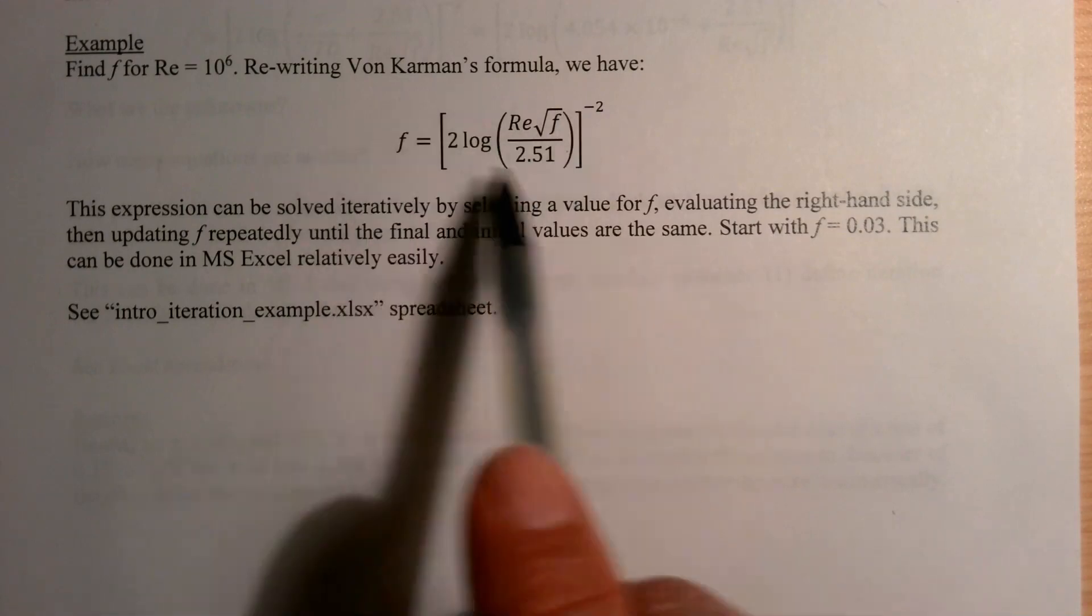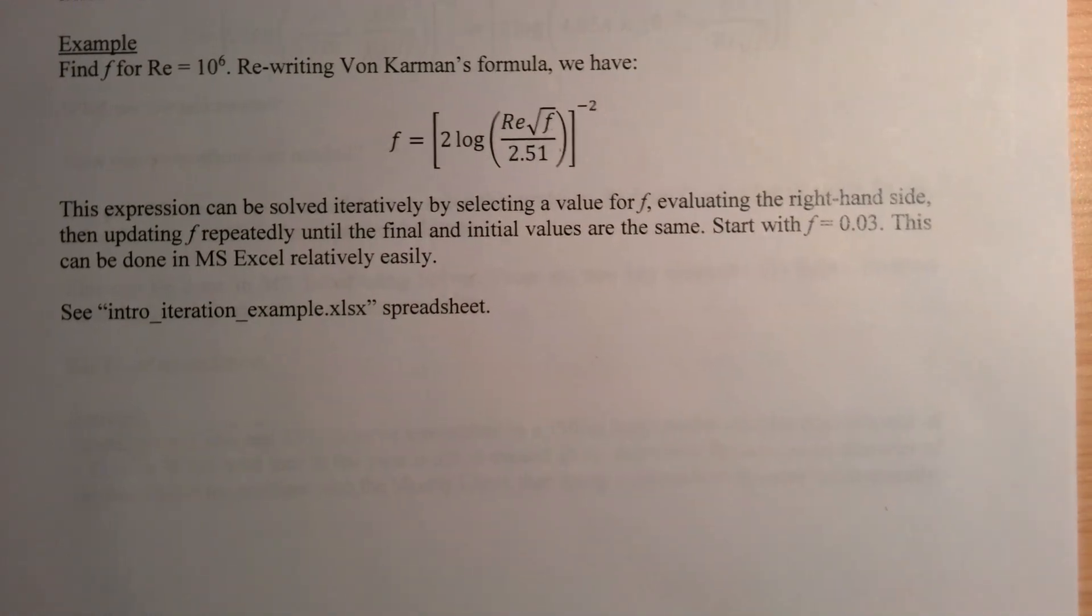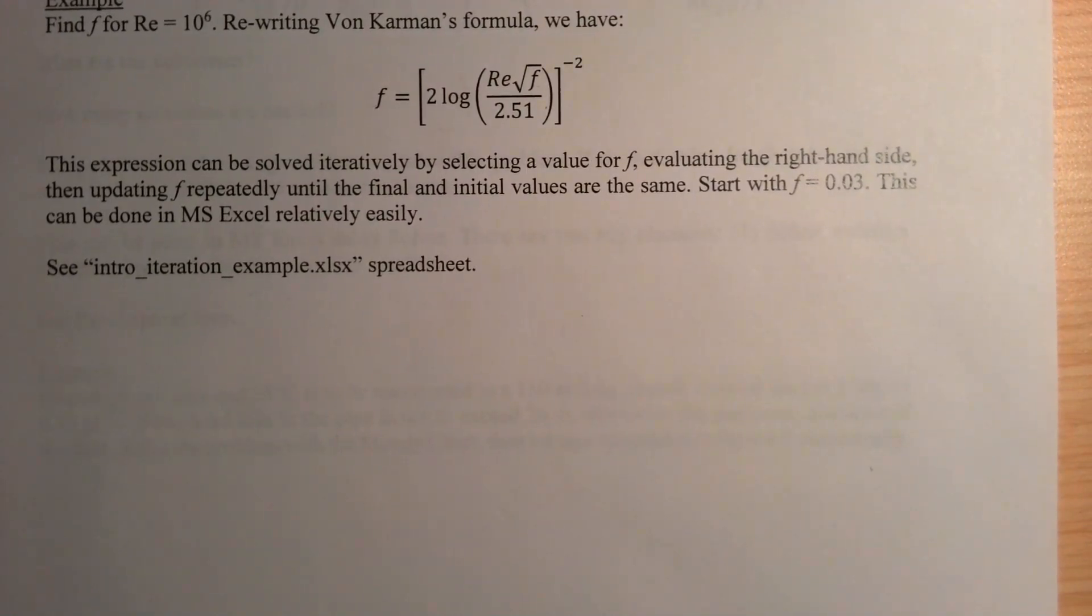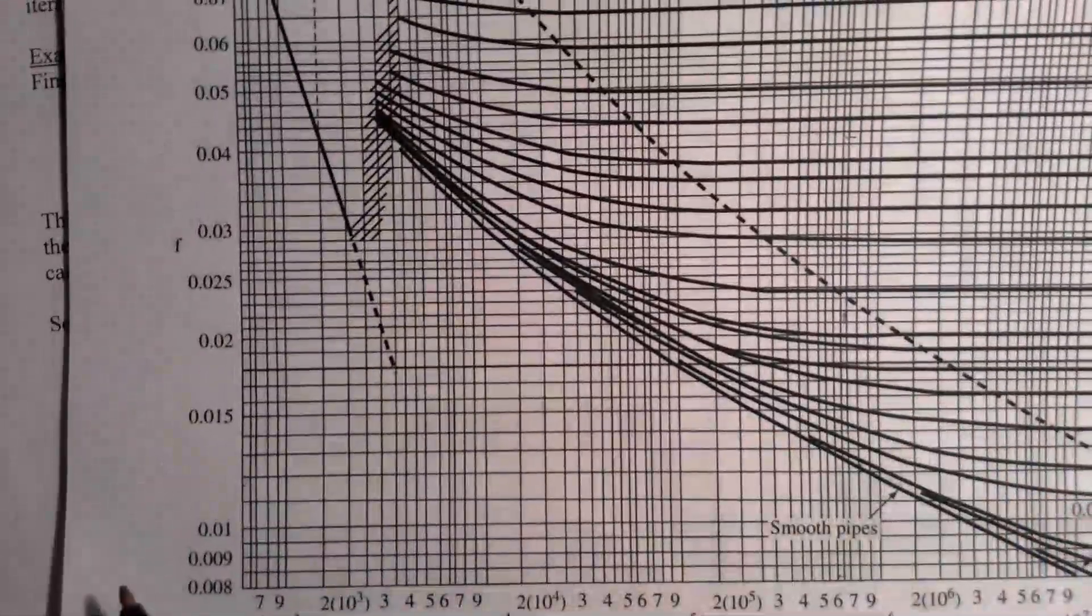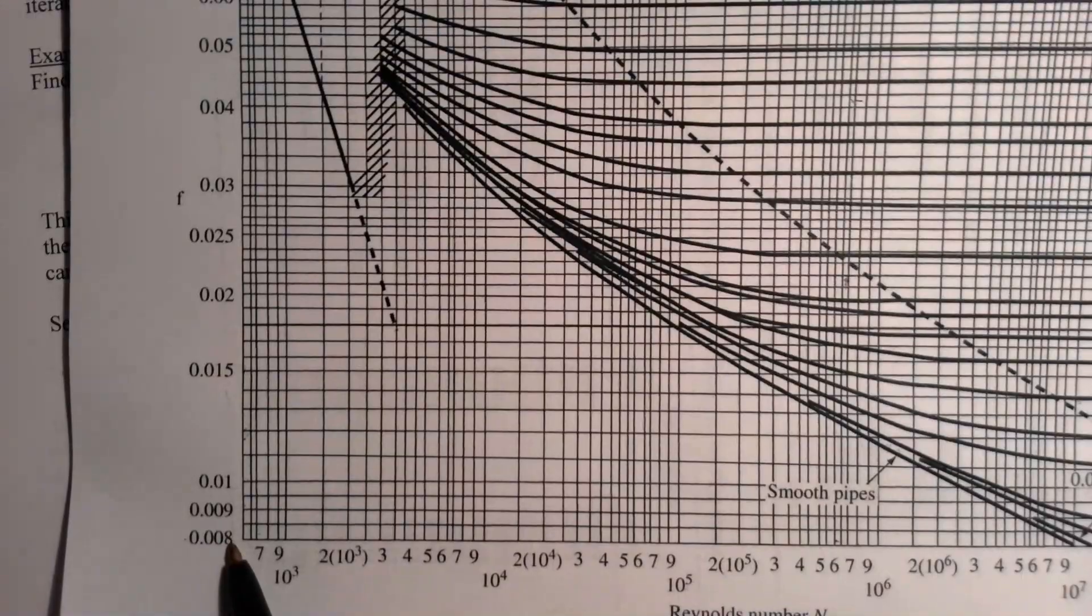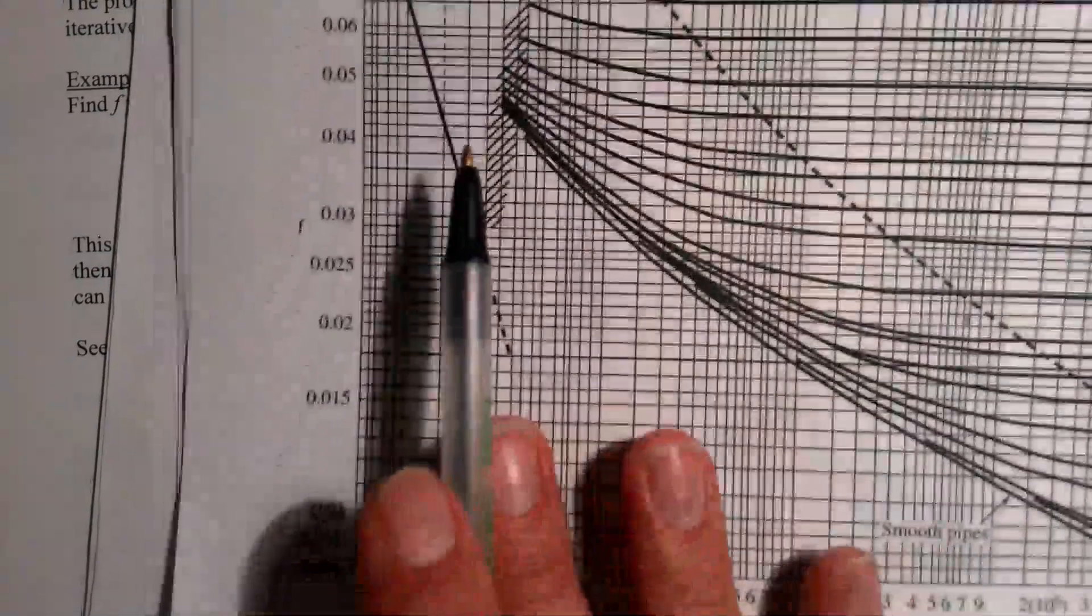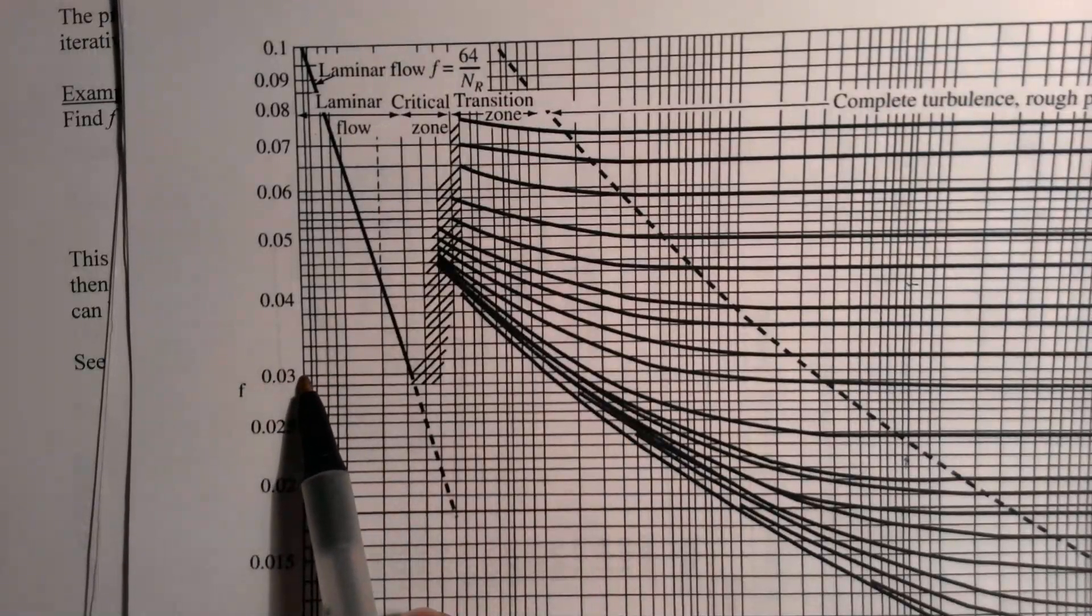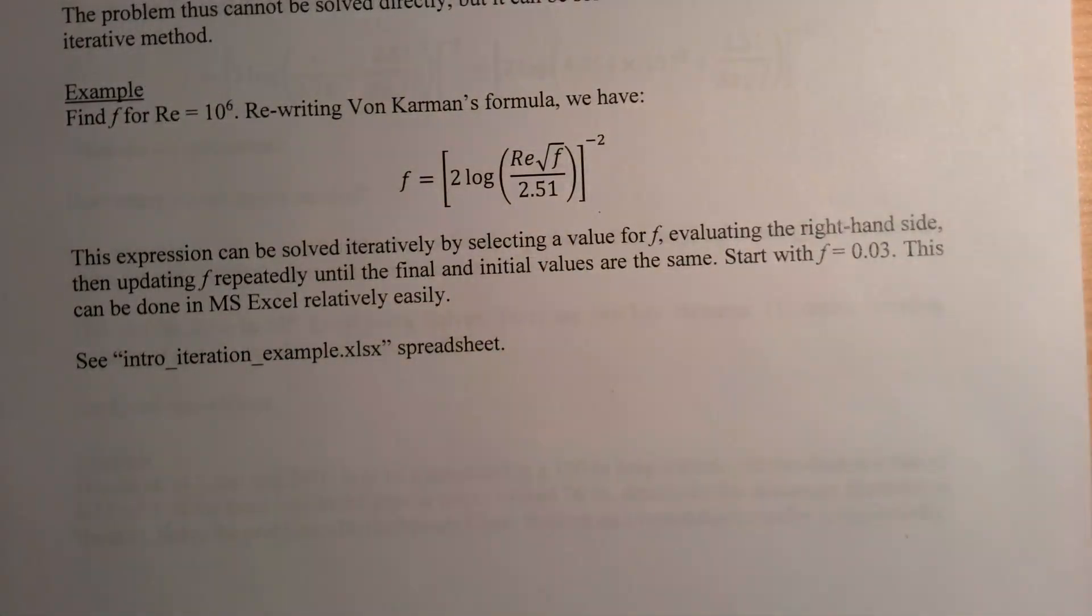And we know the Reynolds number is 10 to the 6, we can compute this side. Then if it became, say, 0.05, we'd say okay, let's start with 0.05 and put that back in. Then it might be 0.04, and then again until it doesn't change anymore. This approach works pretty well for the formulas that you see for computing the friction factor in fluids problems like this. Of course, we know from the Moody chart we have a general idea of what a reasonable range of values is for the friction factor. We can see here in Moody's equation that it goes from 0.008 up to 0.1, so a good starting guess for f—and we expect it's going to have to end up somewhere between 0.008 and 0.1—a good starting point might be like 0.03 or maybe 0.02.